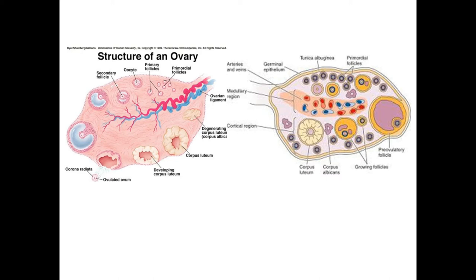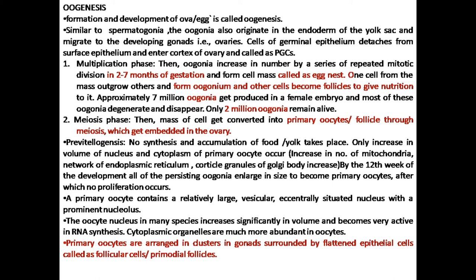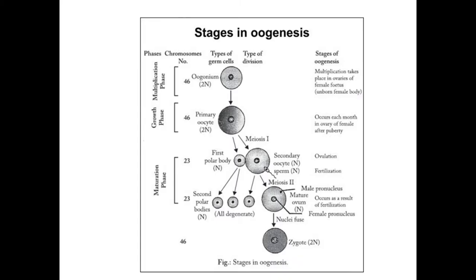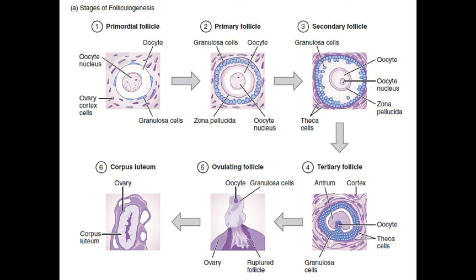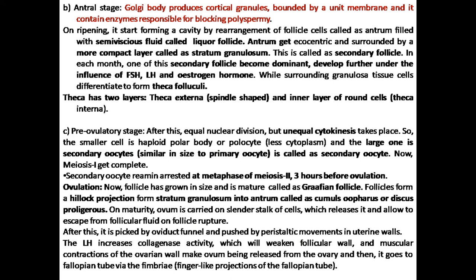I have already dealt with oogenesis and this is the second part. Till now, we have discussed the female gonads, their different parts, the functions of the egg or ova, and the process of oogenesis. We discussed that it is in three phases, like spermatogenesis, although it gets arrested at several places, unlike spermatogenesis. We have also discussed the formation of primary follicle, secondary follicle, and tertiary follicle.